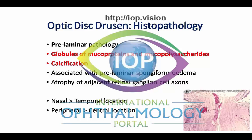The histopathology of optic disc drusen is complex. Basically, we're looking at pre-laminar pathology occurring in the pre-laminar optic nerve. What we know is that globules of mucoproteins and mucopolysaccharides accumulate over a long period of time, and eventually some of these calcify. Histopathologically, these globular aggregates are associated with pre-laminar spongiform oedema of the tissues, and atrophy of the adjacent retinal ganglion cell axons next to these aggregates.